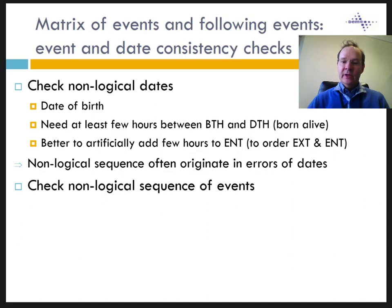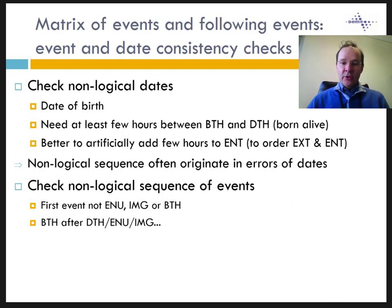The second kind of consistency checks has to do with non-logical sequences of events. The first event for any individual should always be one of these three: enumeration, in-migration, or birth. Non-logical sequences could be birth after death, or enumeration or in-migration after death. Non-logical sequences could also be a succession of the same event — for example, in-migration followed by in-migration.